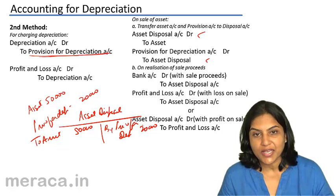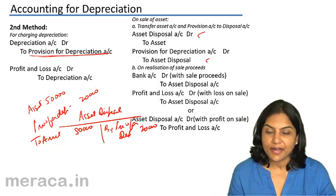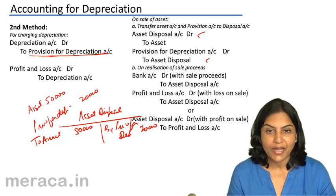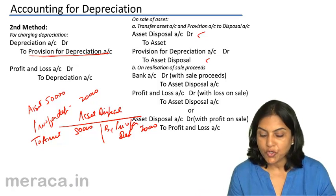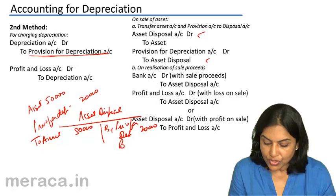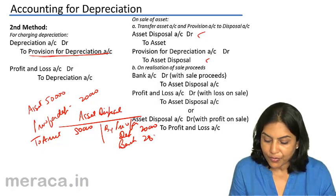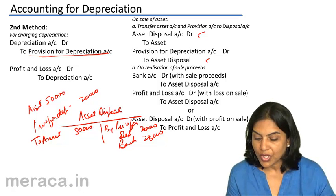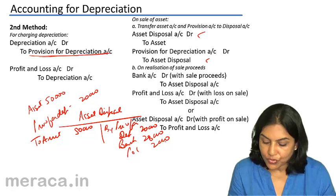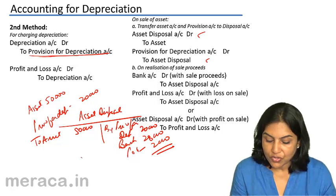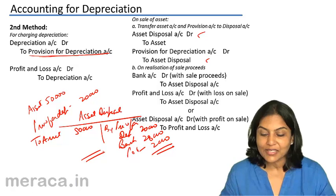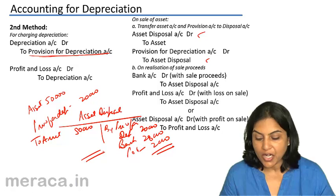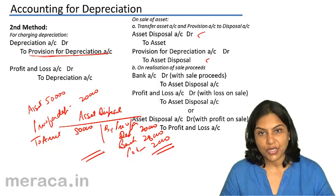On sale of the asset, we pass an entry: bank account debit to asset disposal account. Suppose this asset is sold for 28,000 — bank debit 28,000. Therefore, we suffer a loss of 2,000 and this loss is transferred to the profit and loss account. In case of loss on sale of asset, the entry is: profit and loss account debit to asset disposal account.